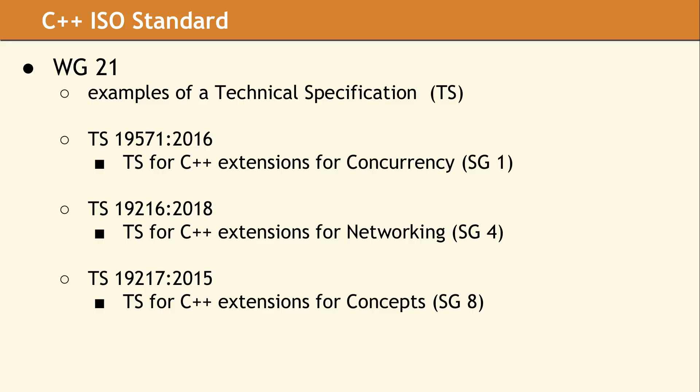Looking at a few sources, we were able to confirm the 2015 TS for Parallelism was merged into C++17. However, there is a revised TS for Parallelism II, which was published in 2018 and is still underway. According to CPP reference, the TS for Coroutines was published in 2017 and updated towards the end of 2018, with no actual indication of the current status.